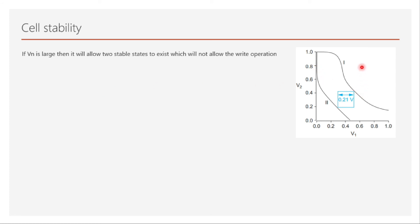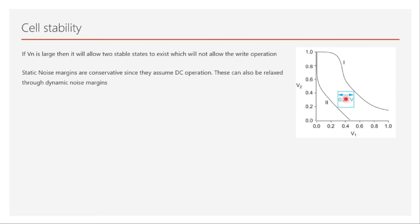We want only one stable state during write, and the second stable state should not exist. In the butterfly curve for write margin, if curve two is approaching curve one, that is bad. If Vn is too large, two stable states exist, which will not allow the write operation. The size of the square in this case represents the write margin.